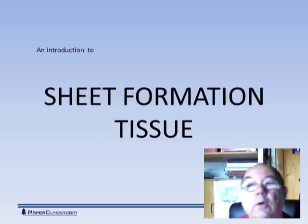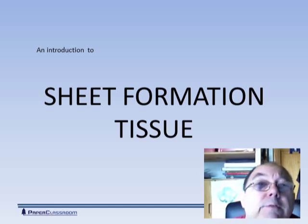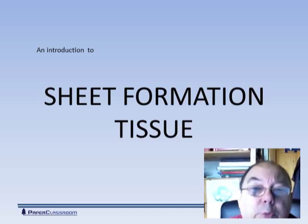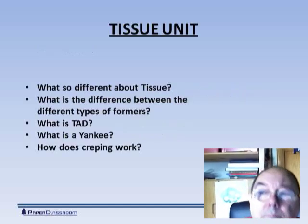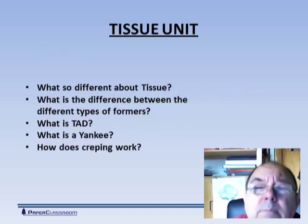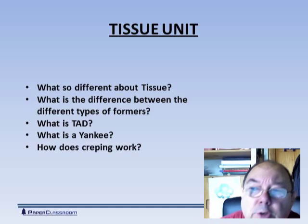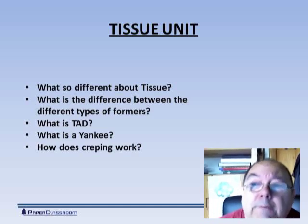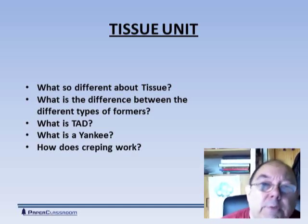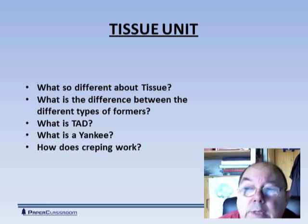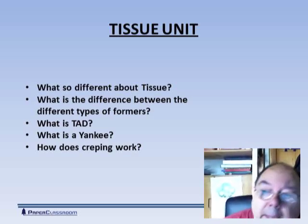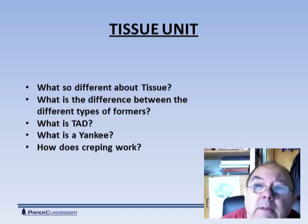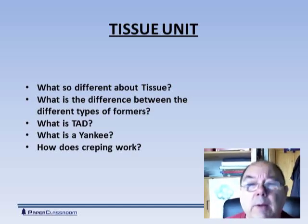In this section we're going to be looking at sheet formation for tissue production. The questions we'll be addressing are: What's so different about tissue? What's the difference between the different types of formers used for producing tissue? What is a TAD? What is a Yankee? And finally, how exactly does creping work?